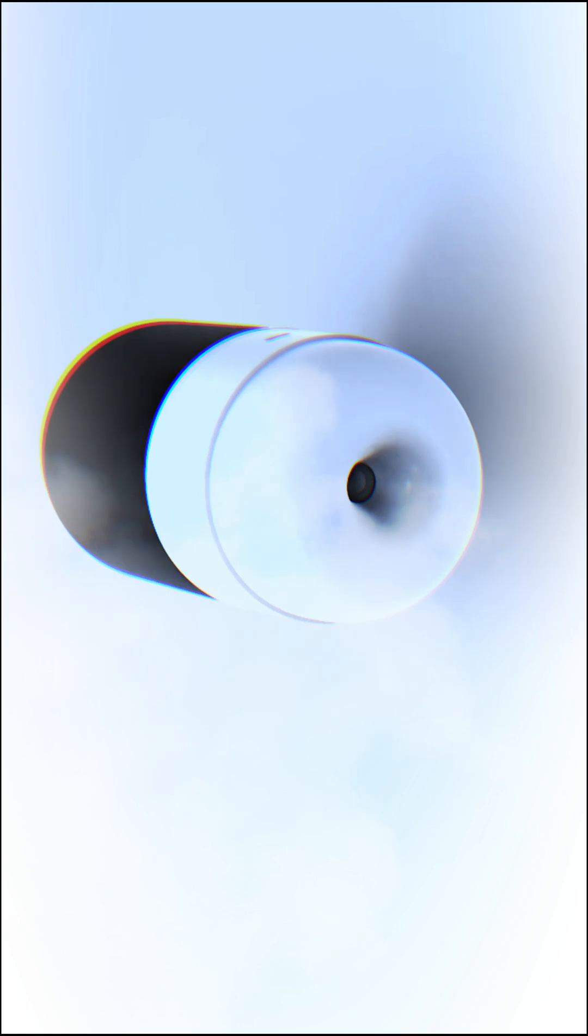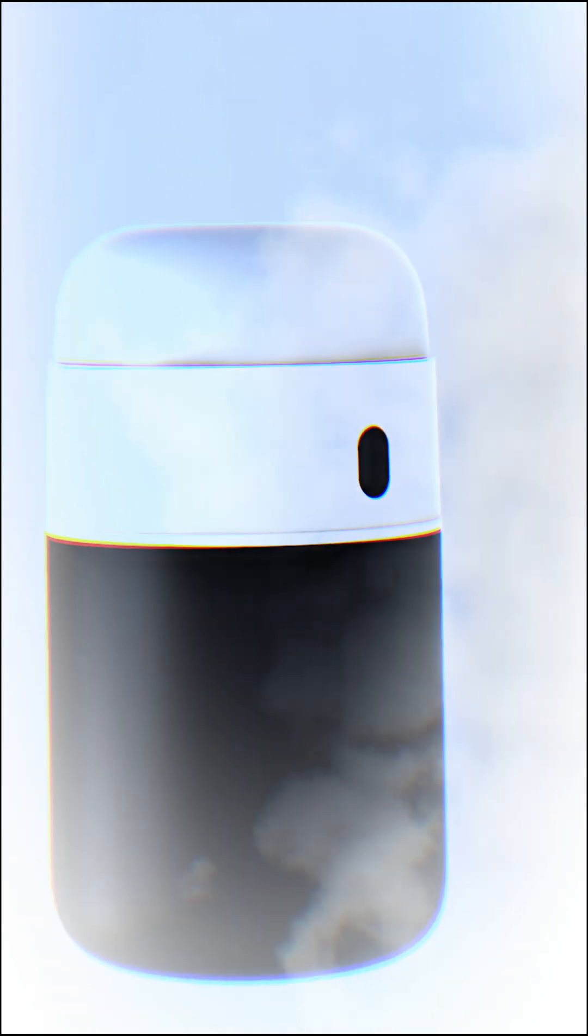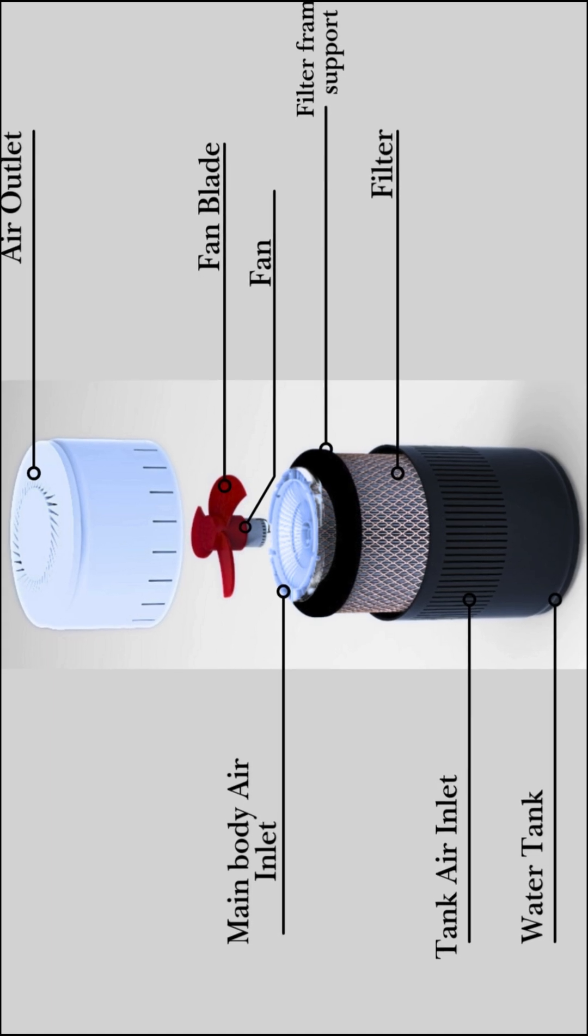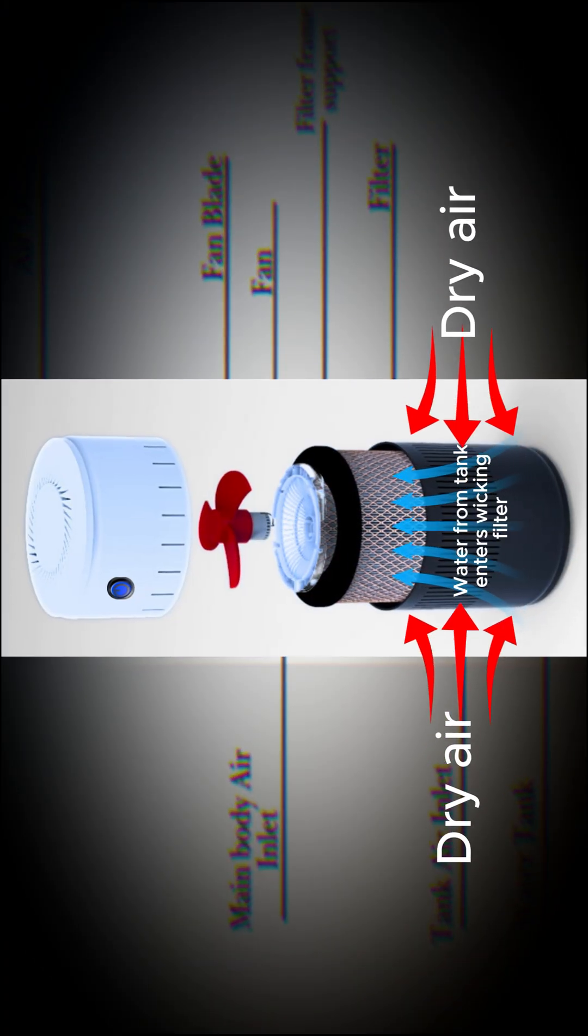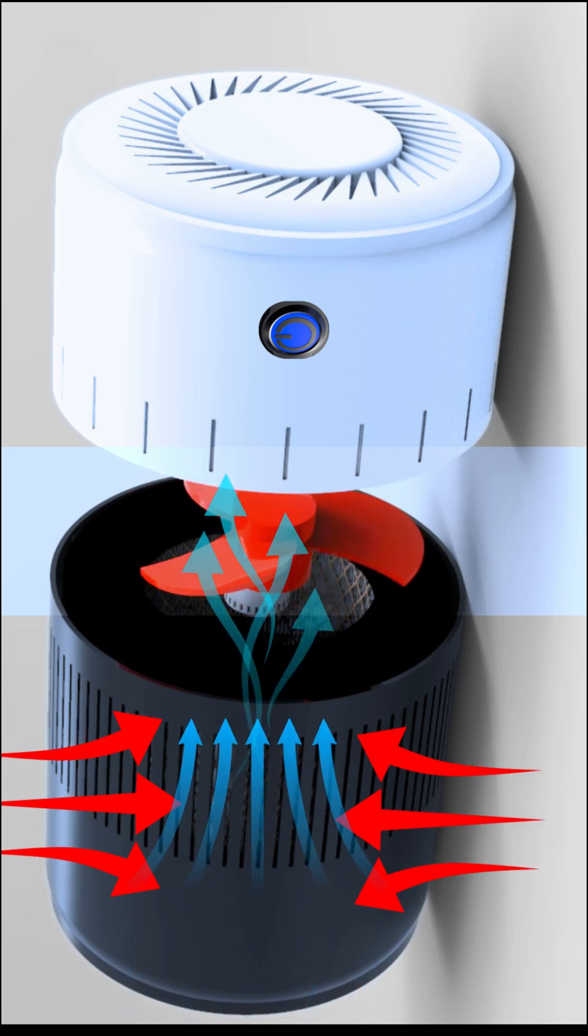Here's what I learned: humidifiers can either produce cool mist or warm mist. Cool mist humidifiers include evaporative, which converts water into cool mist via natural evaporation by the passage of dry air assisted by a wicking filter and a fan.